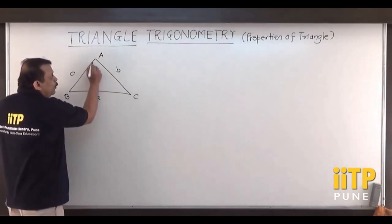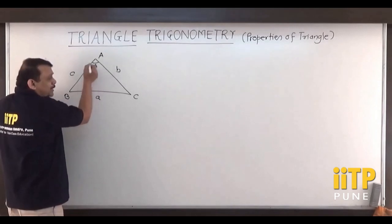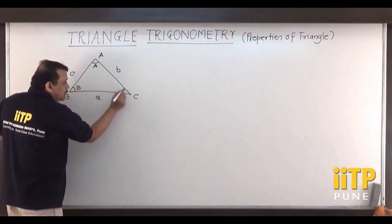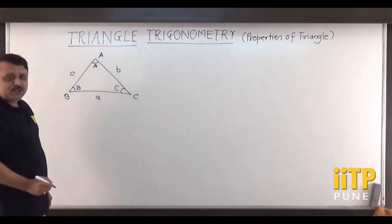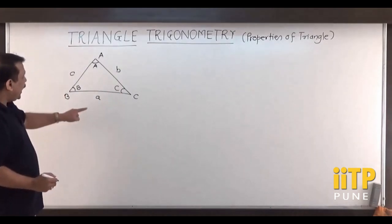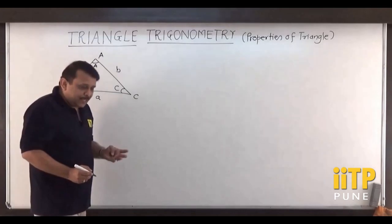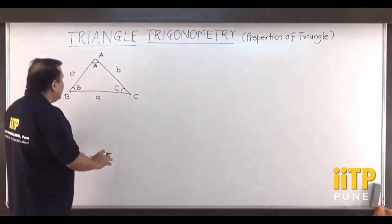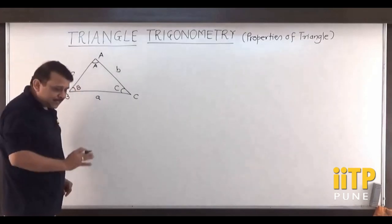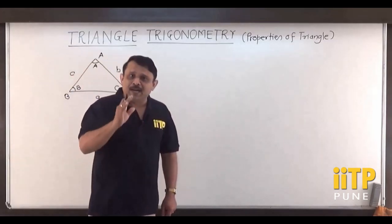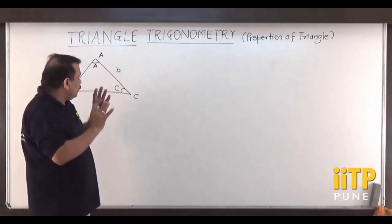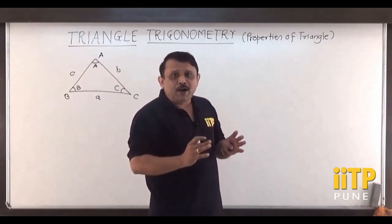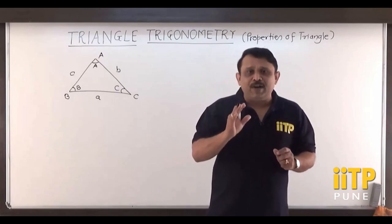We denote the angles at the vertices by the corresponding capital letters A, B, and C. So I have 6 elements related to the triangle — 3 of which are sides and 3 of which are angles. So 3 sides plus 3 angles are called the 6 elements of a triangle.